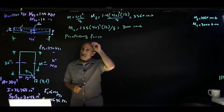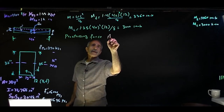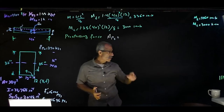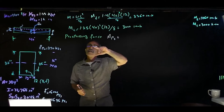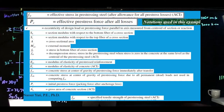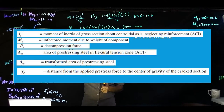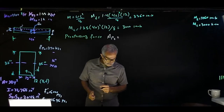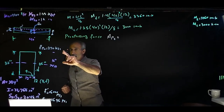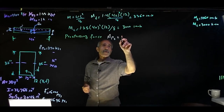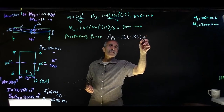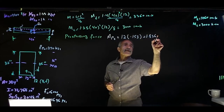Next, I want to calculate the prestressing force and the area of the prestressing steel, Aps. Before that, note there is a lot of notation used in this example — copy the list of notation from the screen. We're going to use the PCI method, which has 10 steps, to do the cracked section analysis. Aps = 12 strands × 0.153 in² (area of a half-inch strand) = 1.836 in².